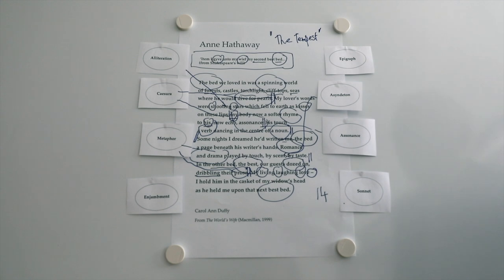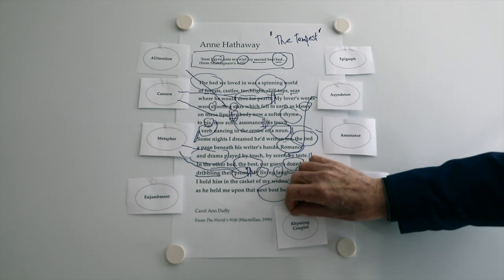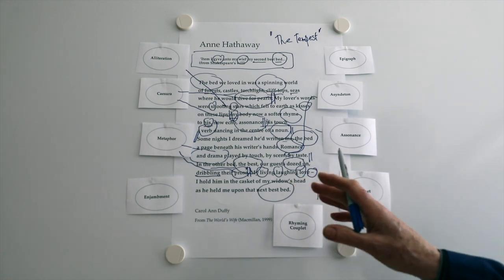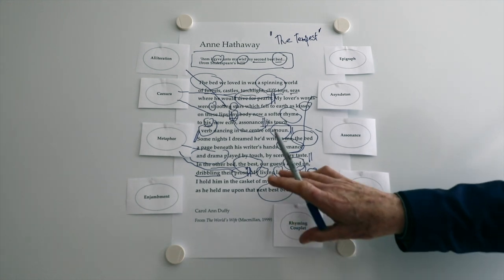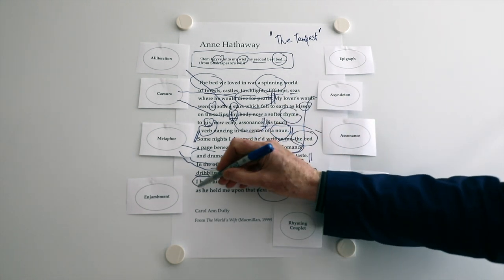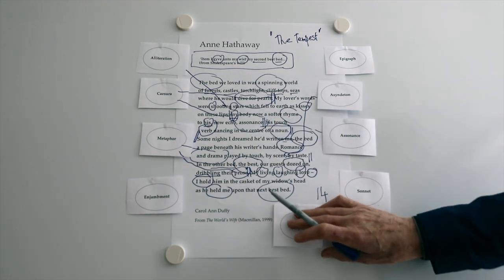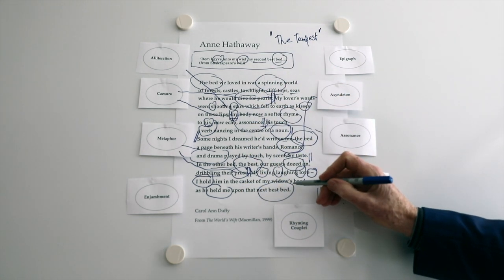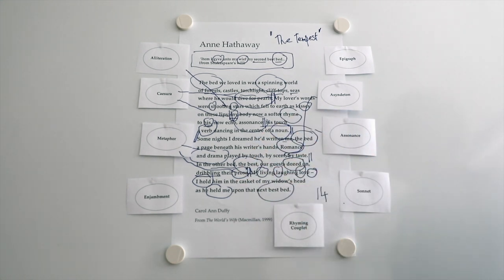And this is where we return to the sonnet form. The last two lines are a rhyming couplet. It's the first time we've got a proper rhyme. It's a masculine rhyme because it's short, single syllables. I'll read them. I hold him in the casket of my widow's head. As he held me upon that next best bed. Look at the monosyllables there. How effective they are. How almost definite they are to finish the poem. It's the next best bed. But we know by now that it's going to be the best bed, really. It's not the next best. She held him and he held me. How they complement each other in the rhyming couplet. And of course, casket. He's dead after the will. My widow's head. She's now a widow. But in a sense, a casket. Something could have been from one of his plays.